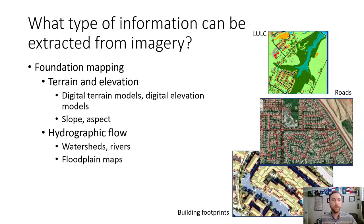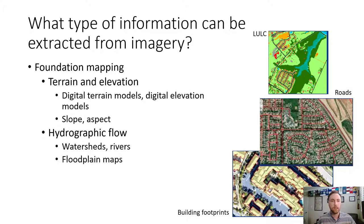We can derive various forms of elevation models from aerial imagery — digital terrain models (DTMs) and digital elevation models (DEMs) — with or without a LiDAR elevation component. We can also pull slope and aspect: slope is essentially the angle of a surface like mountains versus flat ground, and aspect is the angle of that slope in a 360-degree context. Finally, hydrographic flow — we can use aerial imagery to map watersheds, rivers, and floodplain mapping.